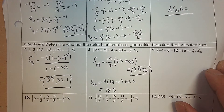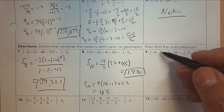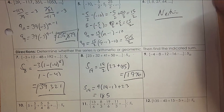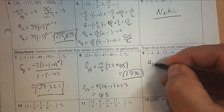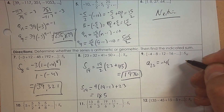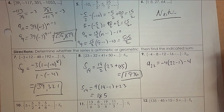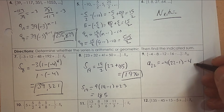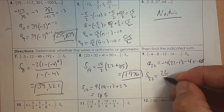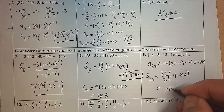Number nine: subtracting four each time, so it's arithmetic. I need to find the last term — the twenty-second term. The common difference is negative four. The twenty-second term setup gives negative eighty-eight as the last term. So the sum of the first twenty-two would be twenty-two divided by two, times the first term plus the last term. Put it in your calculator and you get negative one thousand and twelve.